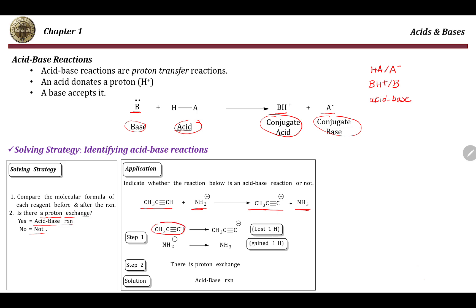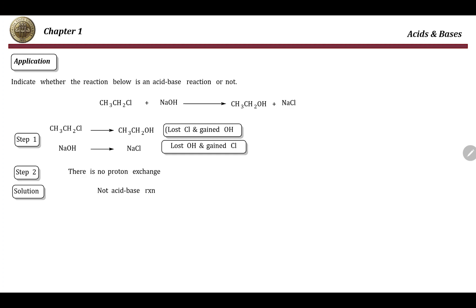For example, if I compare the structure of this compound to its structure after the reaction, I can see that this compound actually lost one hydrogen. And if I look at the second compound, which is NH2 minus, I can see that NH2 minus actually gained H+ and became NH3. So one proton was transferred from this compound to this compound, and that's why this is a proton exchange process and this is an acid-base reaction.